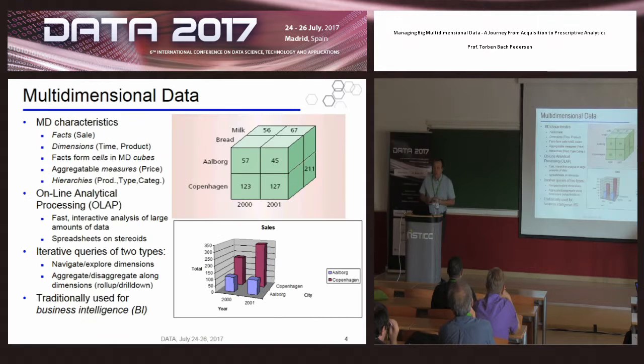So first, a brief recap. What is multidimensional data? Well, multidimensional data is about making sense of your transactional data or sensor data or whatever. The most important events are called facts. So if we have a sales example, the sale itself would be a fact.